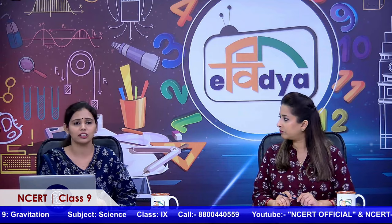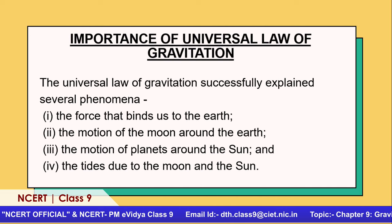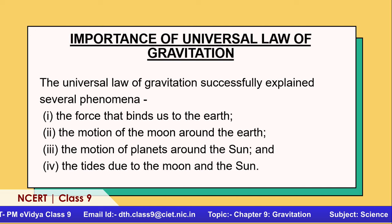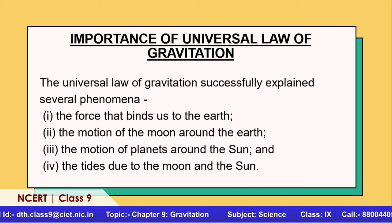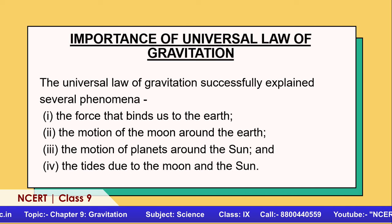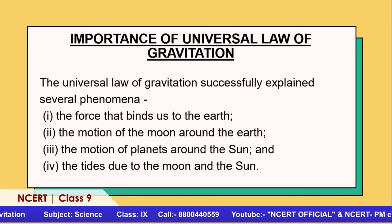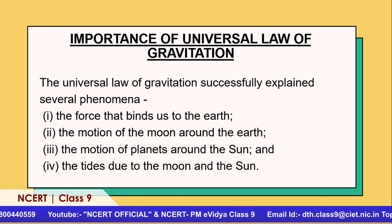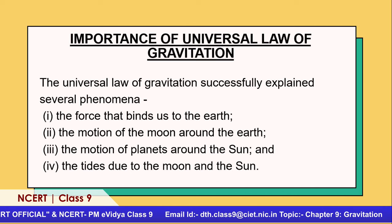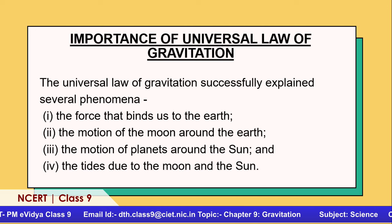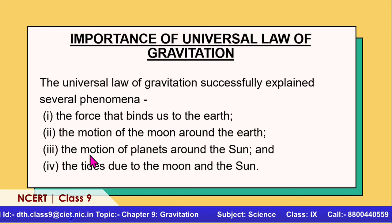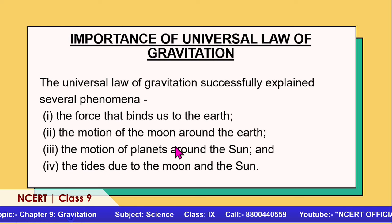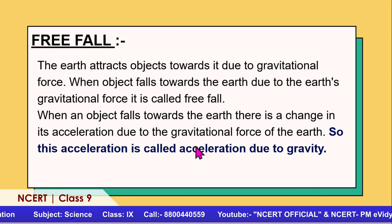Now, the importance of the Universal Law of Gravitation: it explains four key phenomena. Number one: the force that binds us to the Earth. Number two: the motion of the Moon around the Earth. Number three: the motion of planets around the Sun. Number four: the tides due to the Moon and the Sun. These are the four phenomena explained by the Universal Law of Gravitation — exam questions often ask about its importance.